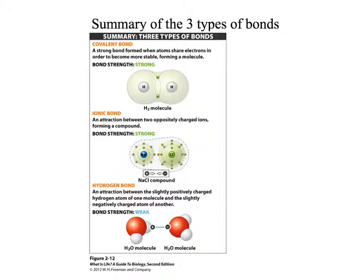So a quick summary. Covalent bonds are strong bonds formed when atoms share electrons in order to become more stable forming a molecule. Ionic bonds are an attraction between two oppositely charged ions forming a compound. These charged ions are created when there is a complete transfer of electrons. Hydrogen bonds are a weak bond formed by an attraction between the slightly positively charged hydrogen atom of one molecule and the slightly negatively charged atom of another.